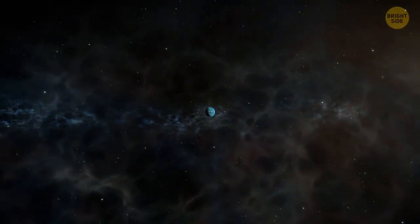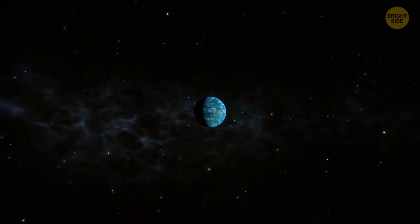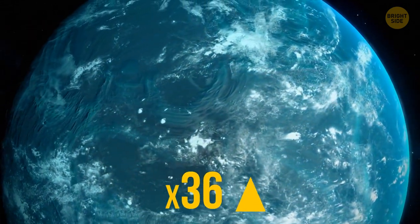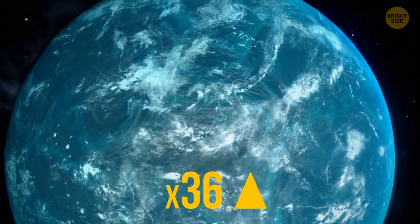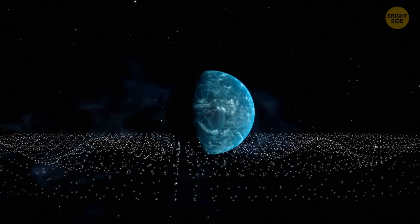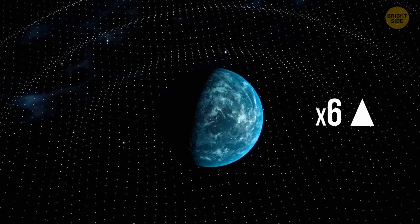We don't know the exact mass of this planet, but scientists think it's bigger than Earth's. Actually, the mass of Kepler-22b can be up to 36 times greater than that of our planet. What does it mean? Vigorous gravity. If the planet is 36 times heavier than Earth, then gravity there will be about 6 times stronger.